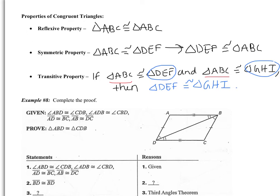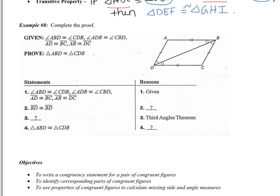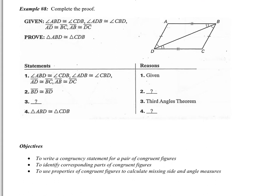Last thing we have to do is a proof — this is example eight. It says complete the proof. So first it gives us a whole bunch of givens which are all marked in the figure: angle ABD is congruent to CBD, and those angles are congruent. The second statement is BD is congruent to BD — you should remember that this is the reflexive property. Any object is congruent to itself. I'm going to mark that in the figure.